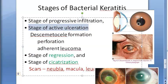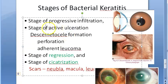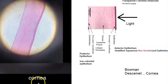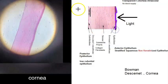Keratitis can lead to ulceration, especially if it is bacterial. In active ulceration, the epithelium gets sloughed off — that is when it becomes an ulcer. A discontinuity in the epithelium with underlying necrosis is called an ulcer.